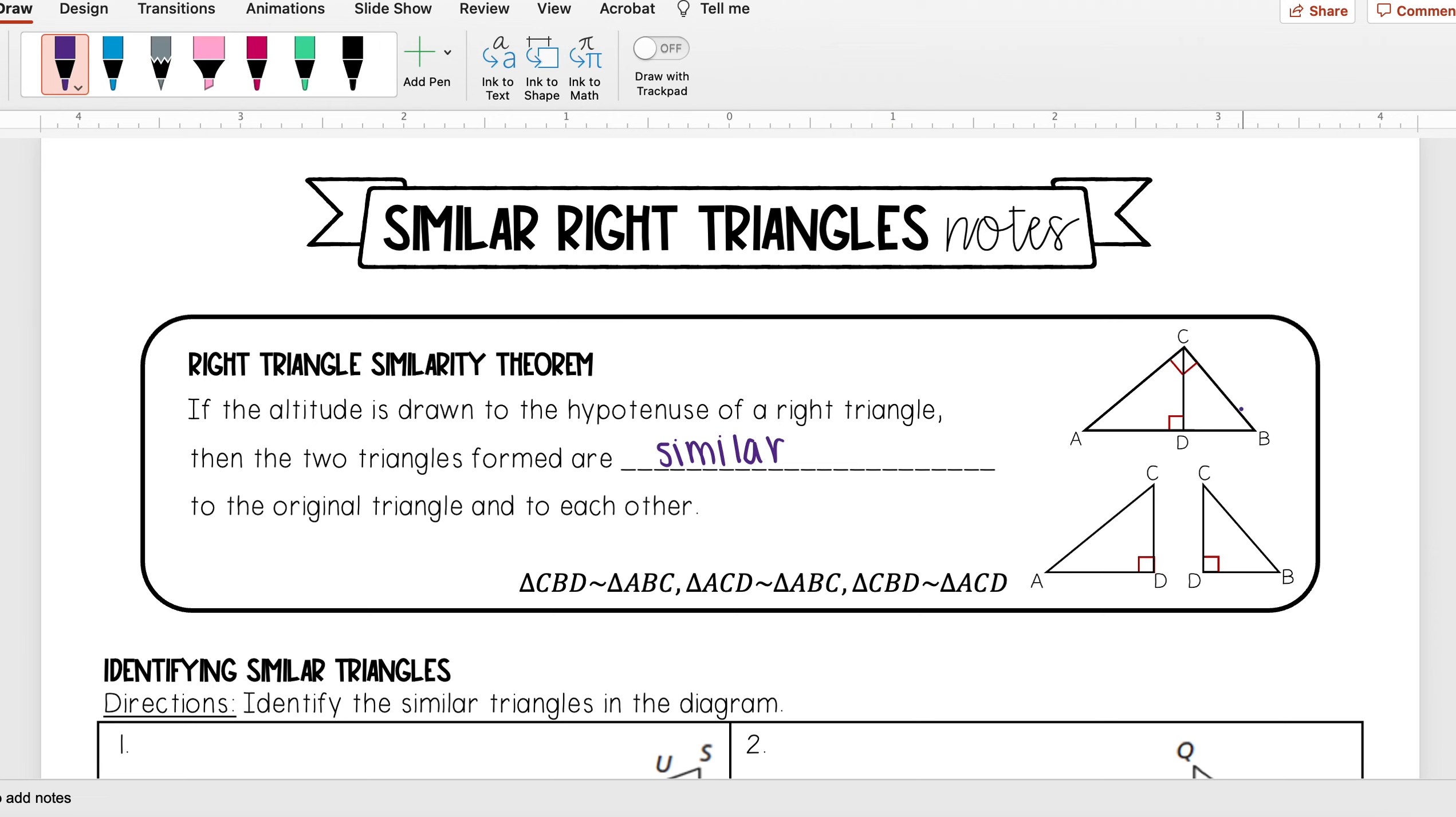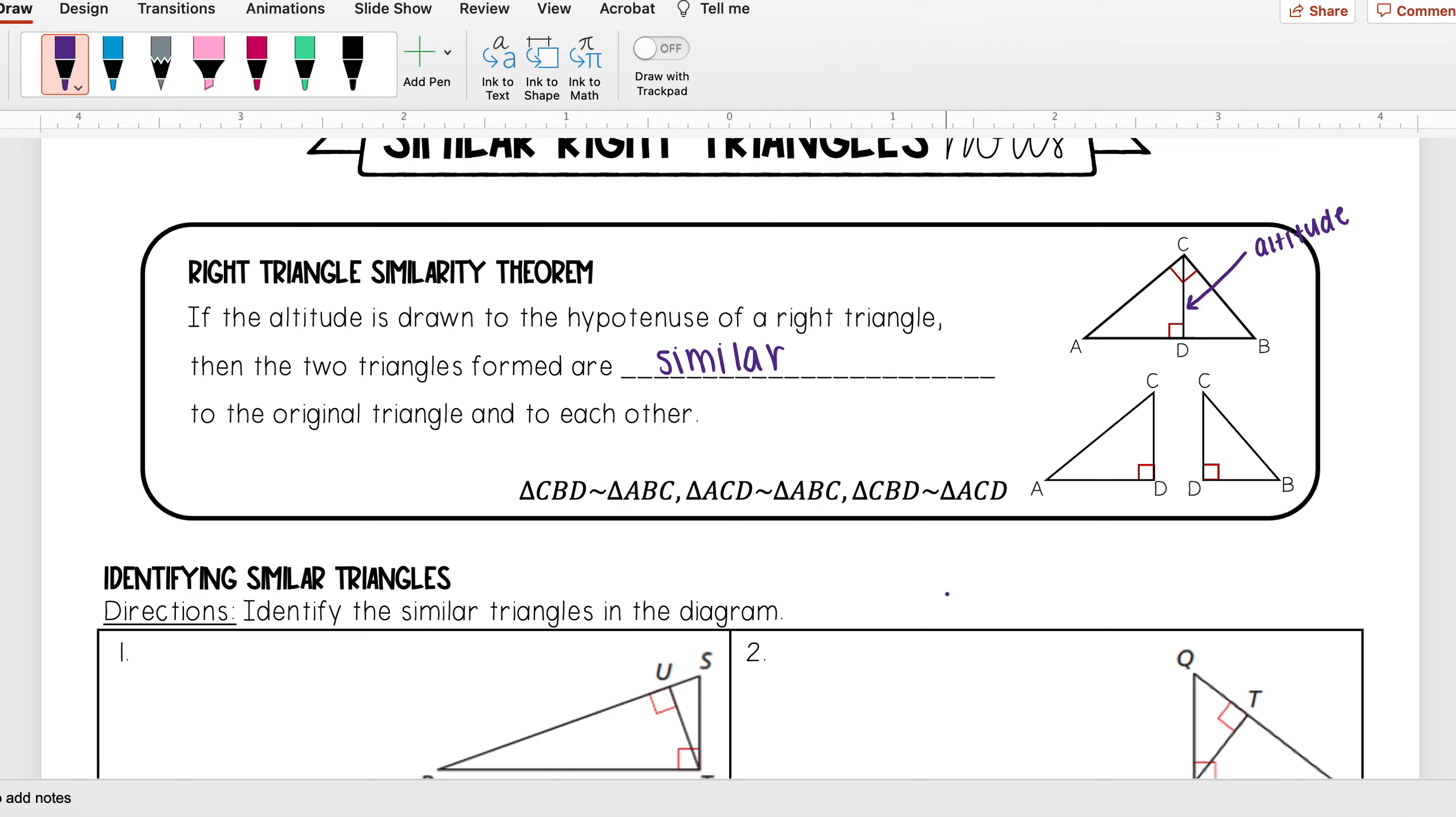So here I see that I have this big triangle, triangle ABC, and I see this altitude which is CD is drawn to create two smaller triangles: triangle ACD and triangle CDB. What the theorem tells us is that all three of these triangles are actually similar to each other, and so we get this similarity statement.